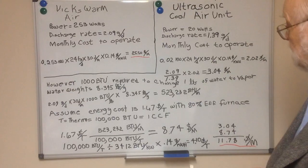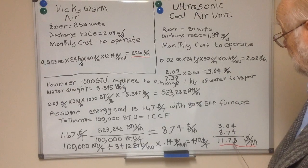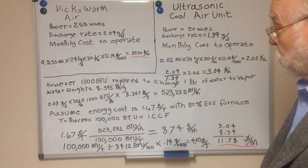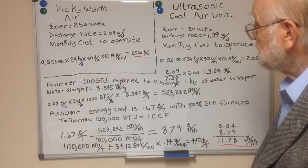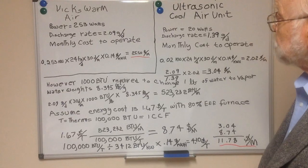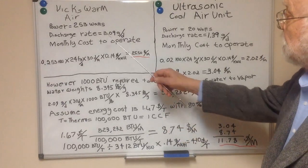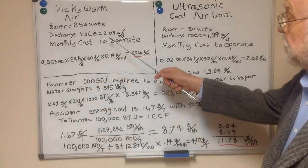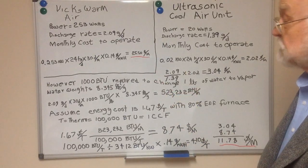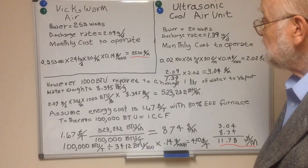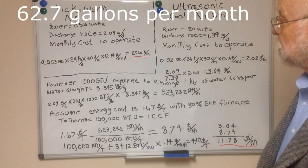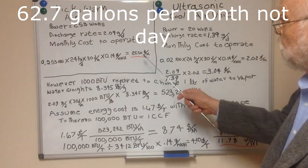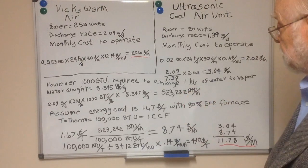It's a good deal cheaper, but if you're going to buy distilled water to run the ultrasonic unit — a little over two gallons a day for 30 days is 61 or 62 gallons per month. If you're dragging that home in gallon jugs, the cost of the water would likely eat up the savings.